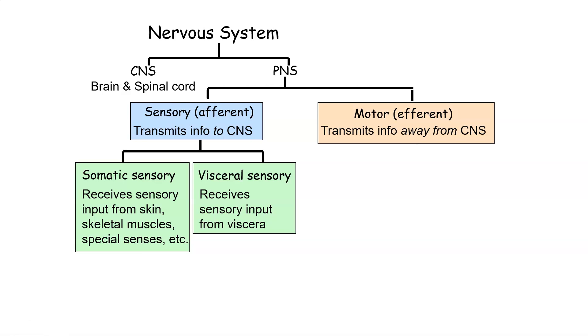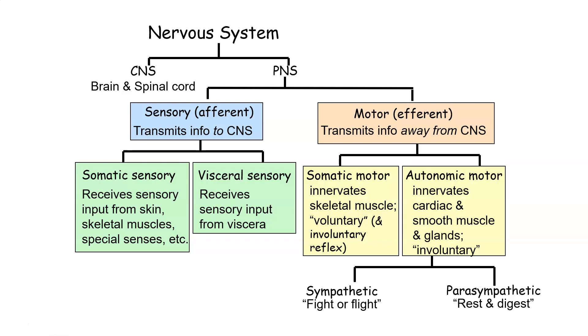So what we're going to focus on this week is these motor or efferent pathways, so transmitting information away from the central nervous system. So we already went over the autonomic motor systems, which innervate a lot of the visceral organs that help maintain homeostasis. And we talked about the sympathetic and the parasympathetic branches. So this week, what we're going to be talking about is the somatic motor efferents, which innervate our skeletal muscles. And they're responsible for voluntary and involuntary pathways.